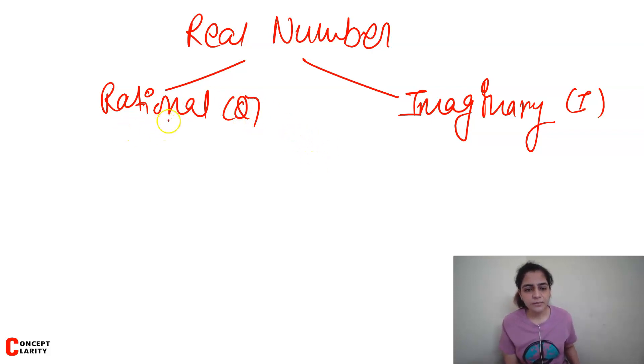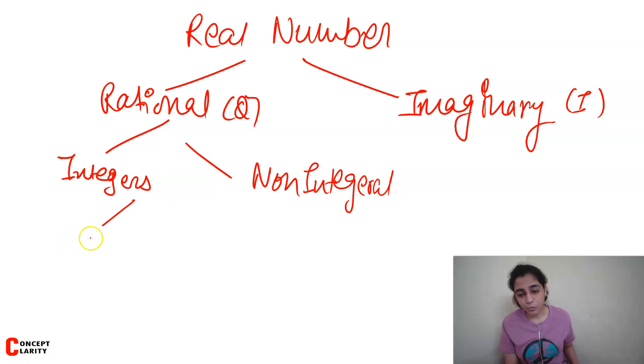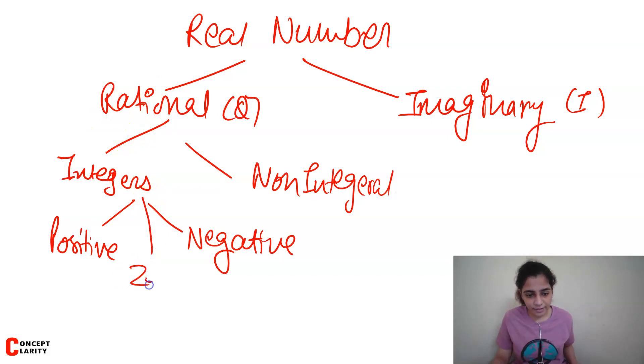Rational numbers further divide into integers and non-integers. Integers have positive, negative and zero - three parts. Now I will give you all examples so that you can understand exactly what's going on. Real numbers, rational numbers. Imaginary numbers you will take in class 11th in mathematics, then you will learn a lot in depth.